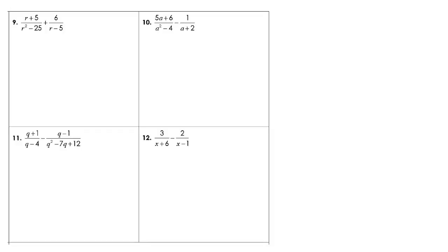Now we're to problems where we might have to factor, then try to simplify, then find a common denominator. Looking at number 9, r squared minus 25 should factor into r plus 5 times r minus 5. Notice that we can cancel those, so really we have 1 over r minus 5, plus 6 over r minus 5. That worked out great because we already have a common denominator. Putting everything together over r minus 5, we have 1 plus 6, so we get 7 over r minus 5.